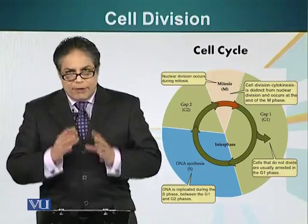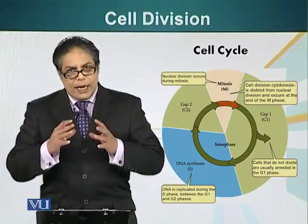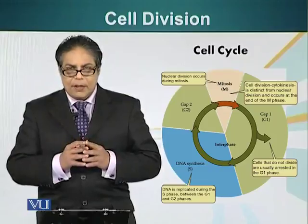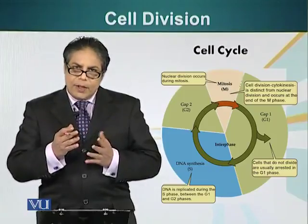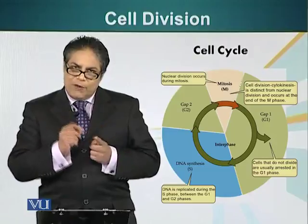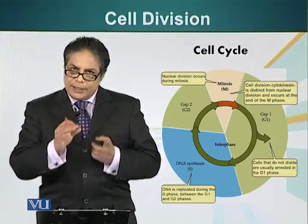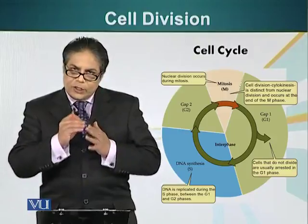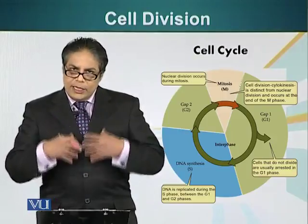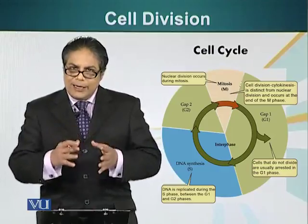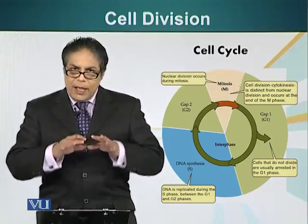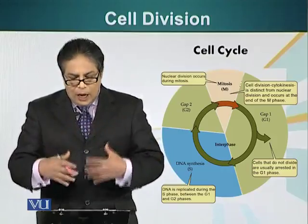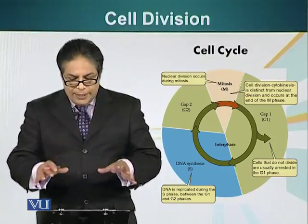Our cell division is regulated. Cells in our body only divide when they have received a signal. For example, when we get a cut, special cell fragments accumulate at the site of the cut — platelets. They stop the bleeding, and additionally they produce special molecules such as platelet-derived growth factor. It diffuses to the surrounding tissue and allows the cells to divide within the neighborhood.